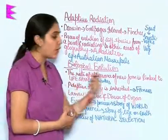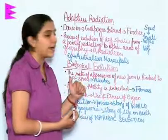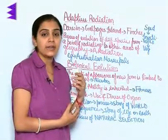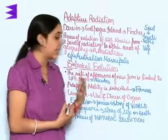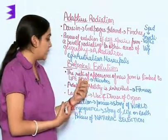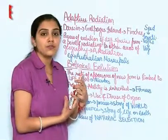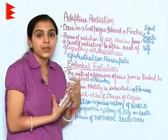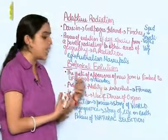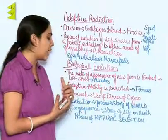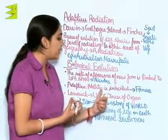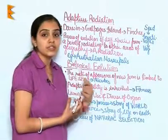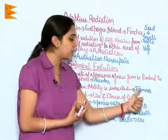In biological evolution, the rate of appearance of new forms is linked to lifespan. For example, microbes can divide within minutes or seconds, so their rate of appearance of new forms will be very fast. In contrast, for larger mammals and human beings, it will take a very long time.